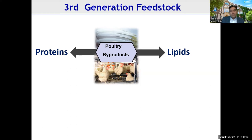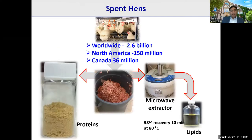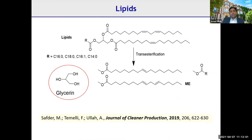Starting with spent hens — there are quite a few in North America and worldwide. We took spent hens, ground them, and extracted lipids and proteins. Lipid extraction was carried out using microwaves; optimization led to about 98% recovery in 10 minutes at 80°C, which is lower than conventional extraction temperatures. The lipids are mostly triglycerides — glycerol with different fatty acids linked to it, both saturated and unsaturated.